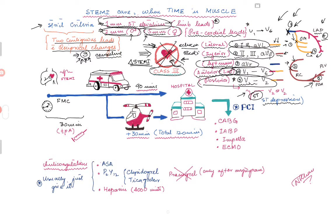An important exception: for posterior wall MI, in leads V1 or V2, you will see ST depression rather than ST elevation. So if a patient has chest pain meeting clinical criteria for MI but no ST elevation, ST depression in V1 or V2 should raise suspicion for posterior wall MI. The arteries involved may be the posterior descending artery (PDA) or posterolateral ventricular (PLV) branches. You should obtain a posterior EKG or right-sided EKG. Some people visualize posterior MI by flipping the EKG and looking at it from the back — it will then appear as classic ST elevation.